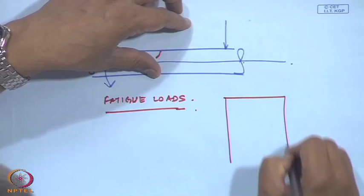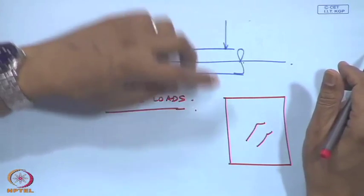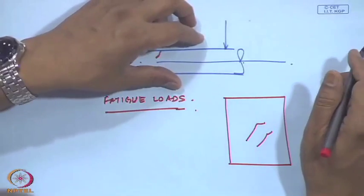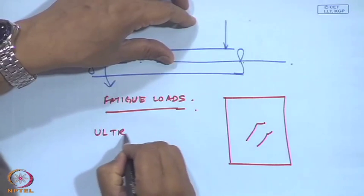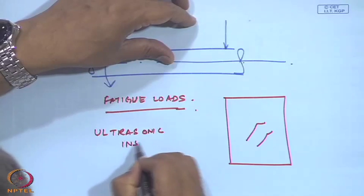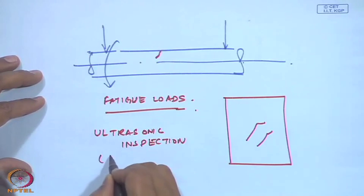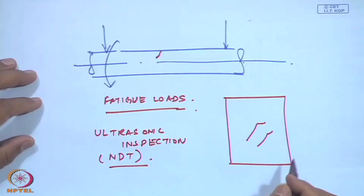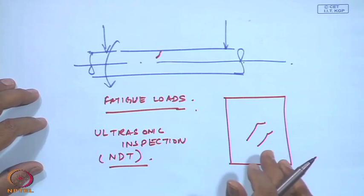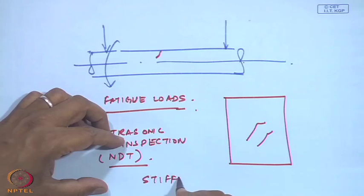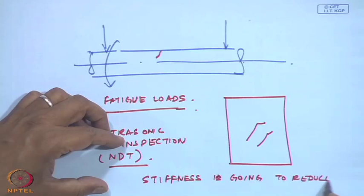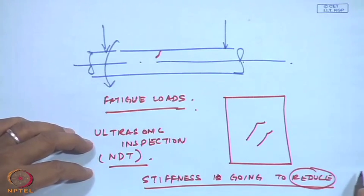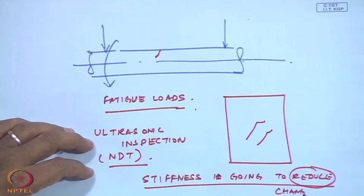Cracks do occur inside and outside structures. If inside, it is very difficult to visually see them, so people do what is known as ultrasonic inspection — NDT-type testing. If a crack has occurred, the local area around the shaft is going to be less stiff; the stiffness is going to change.